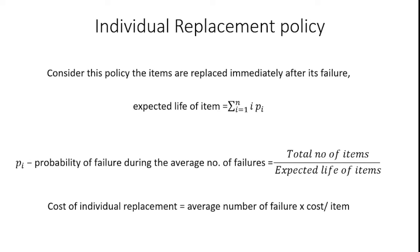The individual replacement policy requires the following formulas. Under this policy, items are replaced immediately after failure. First, we identify the expected life of the item: E = Σ(i × Pi), where i is the number of years and Pi is the probability of failure. Then we find the average number of failures = total number of items divided by expected life. Finally, the cost of individual replacement = average number of failures × cost per item.